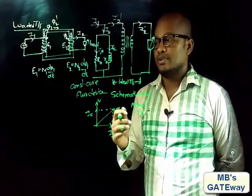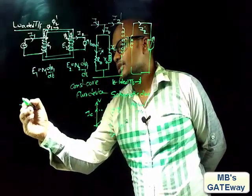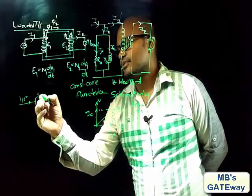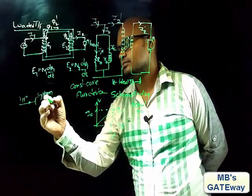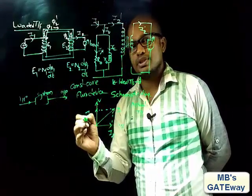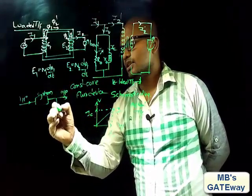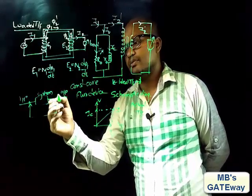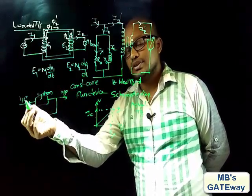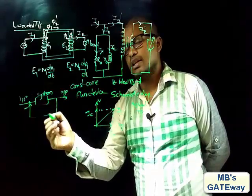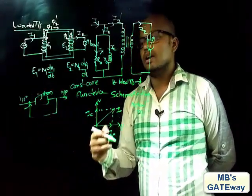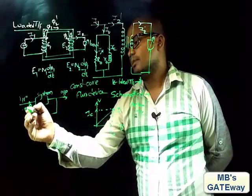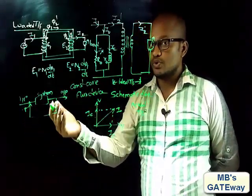Now let's understand why the transformer is also called a negative feedback circuit. In a feedback system, if this is the input signal, this is the system transfer function, and this is the output signal — if the output signal is fed back to the input and the feedback signal decreases the input, that type of system is called a negative feedback circuit. If the feedback signal aids the input, it is called a positive feedback system.